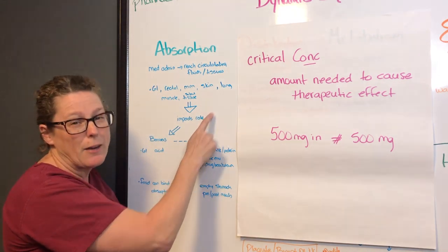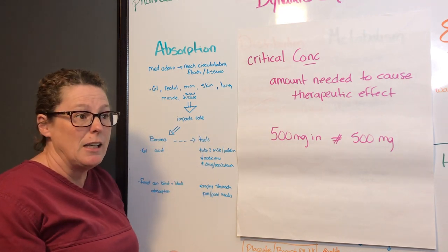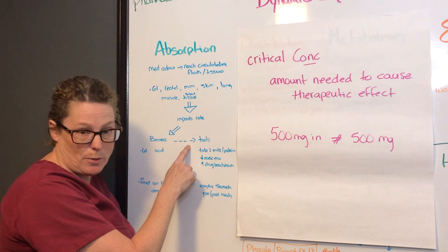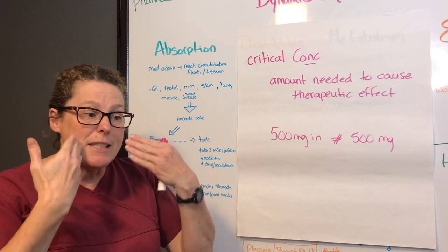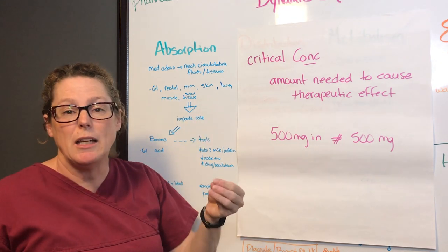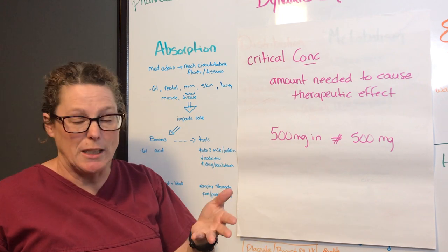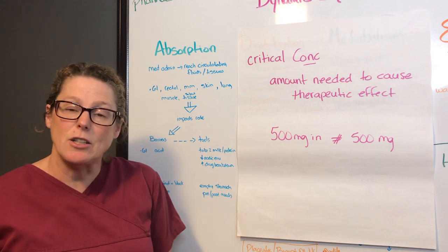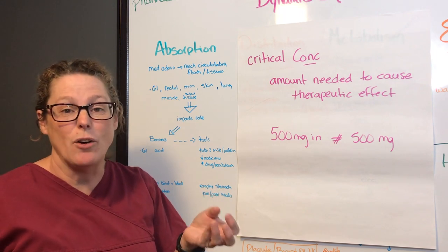The route will certainly impact the rate of absorption, but also the patient's existing conditions in conjunction with the illness or injury being treated. Some barriers to absorption: many of our drugs are taken orally and have been studied in healthy individuals. When we take an oral medication — say ibuprofen or acetaminophen for a headache — those pills go into the stomach and it's stomach acid that starts to break down that medication.